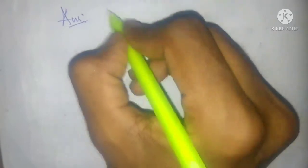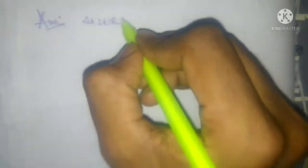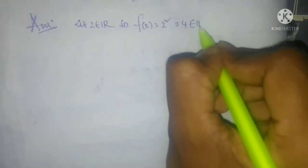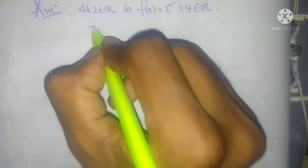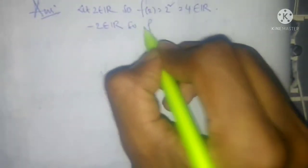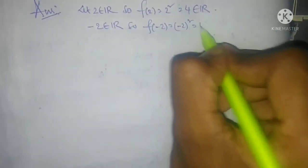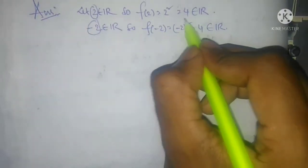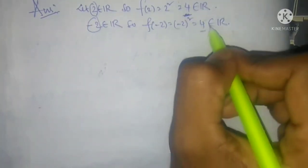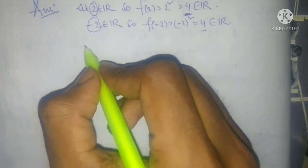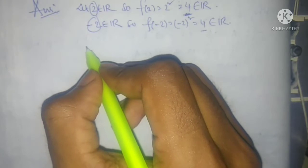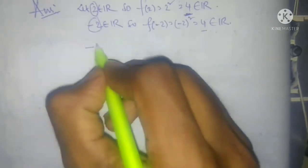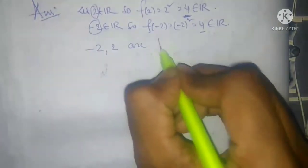Let 2 ∈ ℝ; then f(2) = 4, which belongs to ℝ. Also, let −2 ∈ ℝ; then f(−2) = (−2)² = 4, which also belongs to ℝ. So two distinct elements, 2 and −2, in the domain have the same image 4. Since two distinct elements in the domain have the same image, the injective property does not hold.